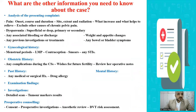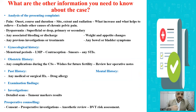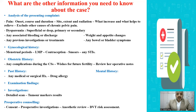The answer for the first question — what are the other information you need to know about the case — please put in your mind the presenting complaint of the patient. The most important part of the history is the presenting complaint. In this patient, the main complaint is pain. You have to ask about the onset, course, and duration of this pain, the site, extent, and radiation, and what increases or relieves the pain.